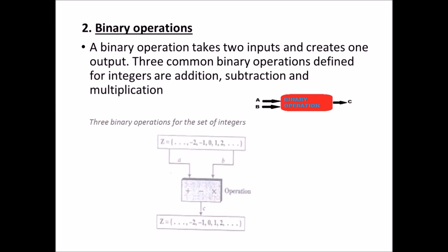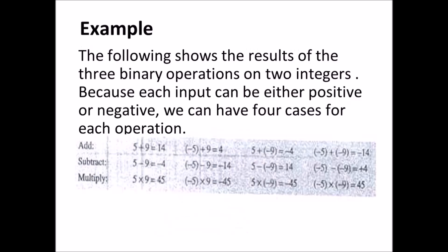As you can see here, each of these operations takes two inputs, A and B, and creates one output C. The two inputs coming from the integer set applied to the binary operations also produce an output which is an integer. Let us consider a few examples of binary operation. The inputs to the binary operation can either be positive or negative numbers; hence we have four cases for each operation. Consider the addition operation: 5 plus 9 equals 14; minus 5 plus 9 equals 4, and so on. Similarly, for other binary operations such as subtraction and multiplication, the results are shown.